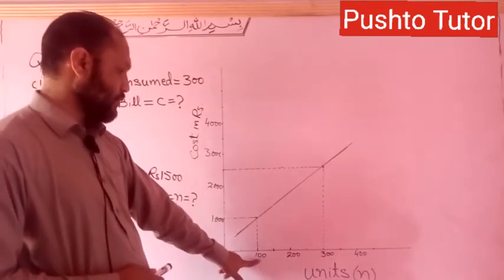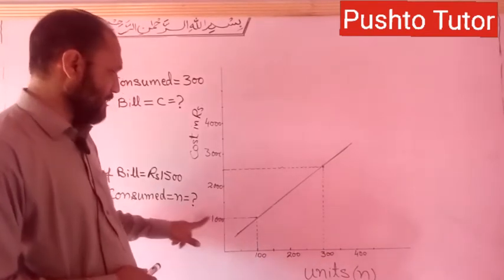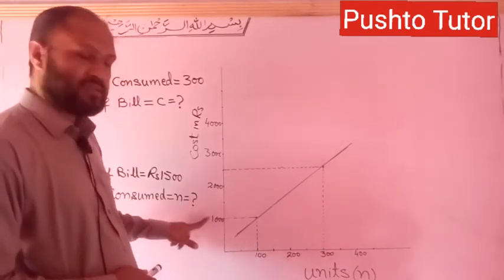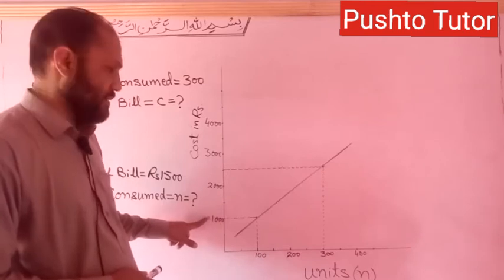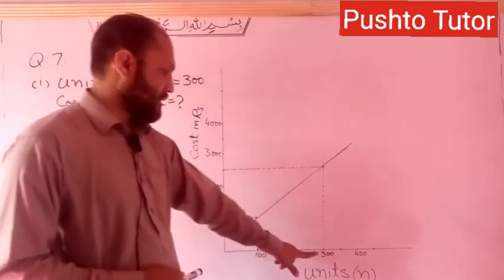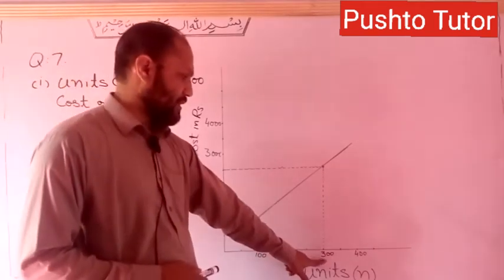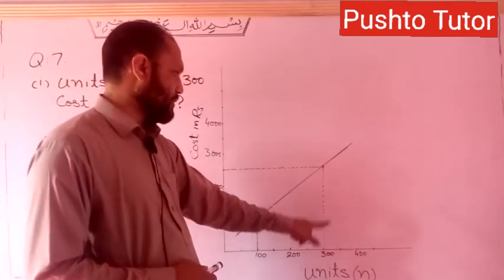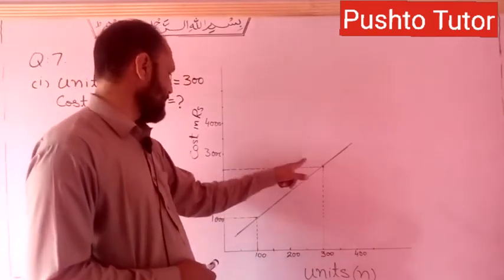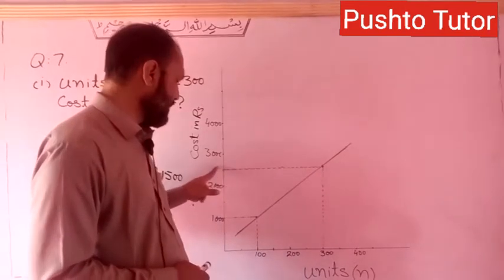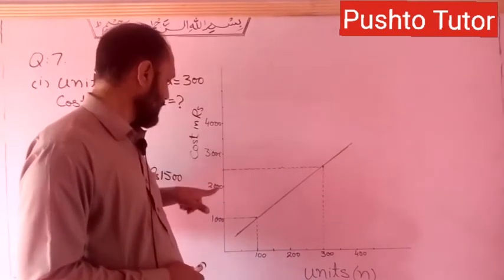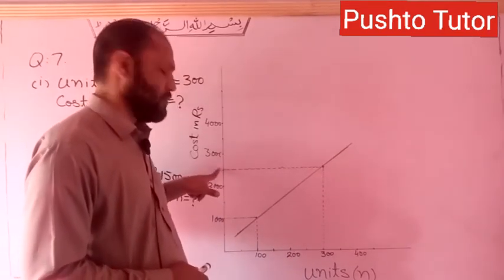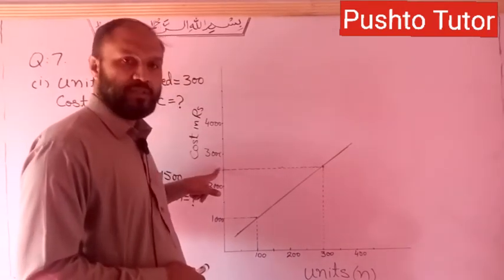We have two points on the graph. At 100 units, the cost is 1,000 rupees. And at 300 units, the cost is 15,000 rupees.